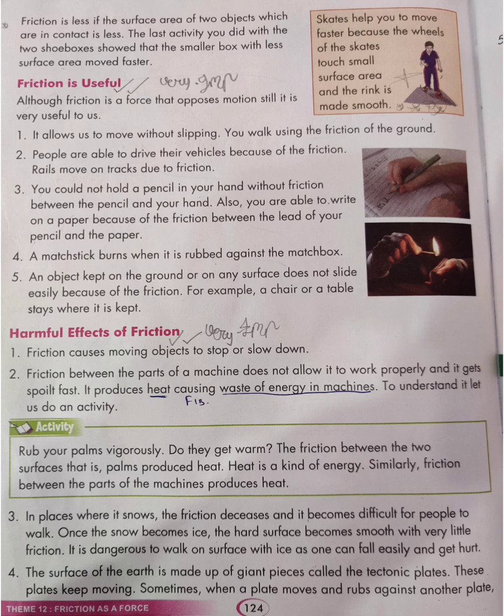Number 4: A matchstick burns when it is rubbed against the matchbox — it burns because of friction. Number 5: An object kept on the ground or on any surface does not slide easily because of friction. For example, a chair or a table stays where it is kept. Without friction, it will slip, causing great difficulty for all of us.